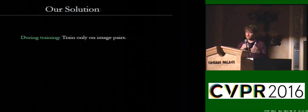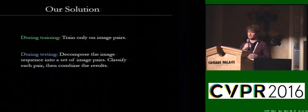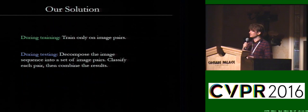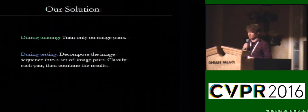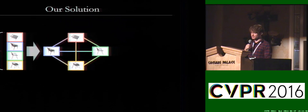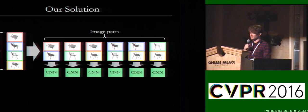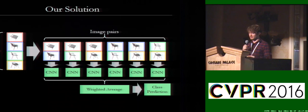Our solution is to train only on image pairs during training. During testing, we decompose the image sequence into a set of image pairs, classify the image pairs independently, and then combine the results. Rather than training across the entire sequence, we only train on image pairs, making the whole thing tractable. For example, given a test image sequence, we create all image pairs available — four images in a sequence leads to six pairs. Each pair is passed through a CNN, classified, and then combined with a weighted average to give the class output.